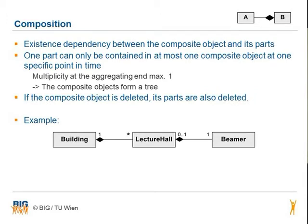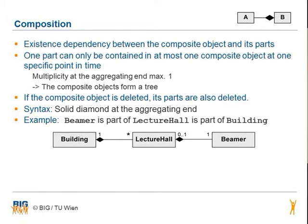If the composite object is deleted, its parts are also deleted. A composition is shown by a solid diamond at the aggregated end. For example, beamer is part of lecture hall which is part of building.